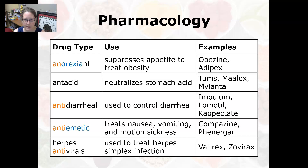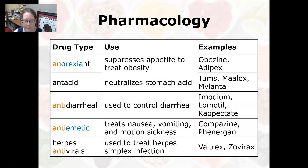Now let's look at some pharmacology for the digestive system. An anorexiant suppresses the appetite to treat obesity, such as Qsymia and Adipex. Antacids neutralize stomach acids, such as Tums, Maalox, and Mylanta. An antidiarrheal is used to control diarrhea, such as Imodium, Lomotil, and Kaopectate.